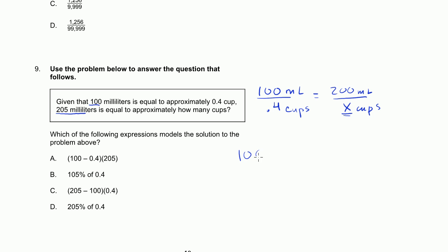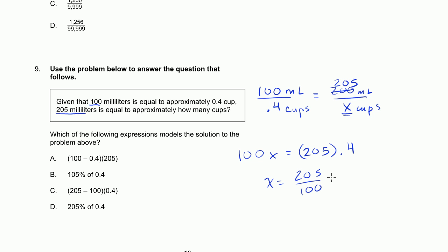So we get 100x. 100 times x is equal to 205 times 0.4. It's not 200 — it's 205 to be exact. So 205 times 0.4. Then we want to divide both sides by 100. So x is equal to 205 over 100 times 0.4.